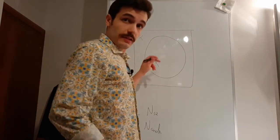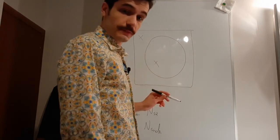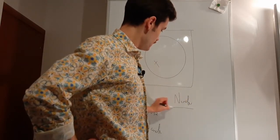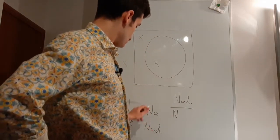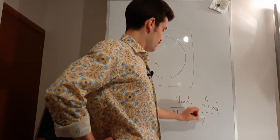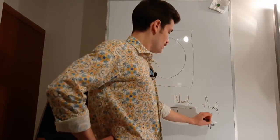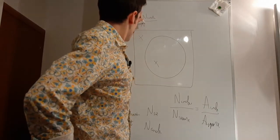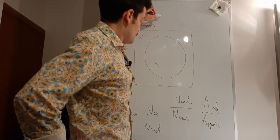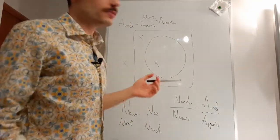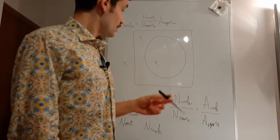You could give as an estimate of the area of the circle as the number of stones that fell inside the circle divided by the number of stones that fell inside the square is equal to the area of the circle divided by the area of the square. We know the area of the square, so the area of the circle will simply be the number of stones in the circle divided by the number of stones in the square times the area of the square.